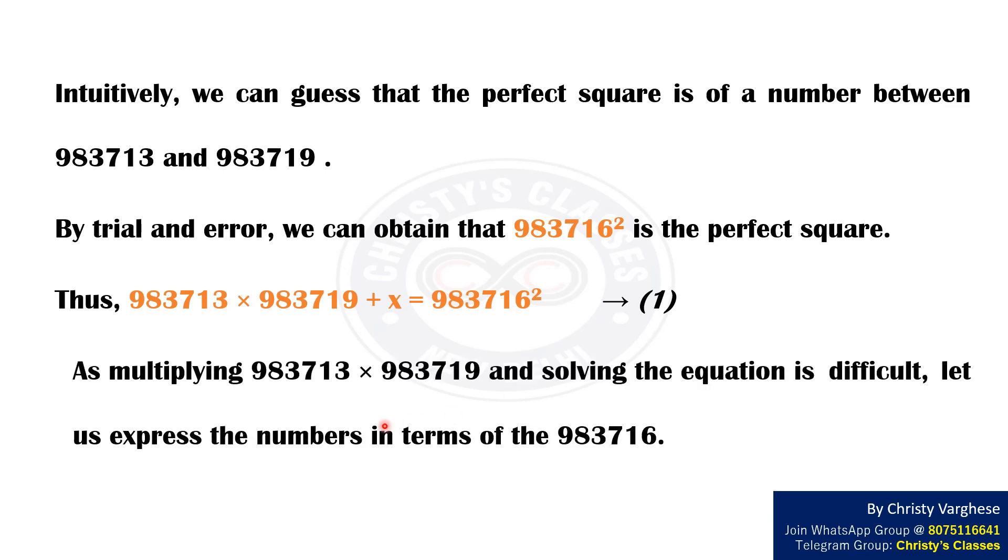As multiplying 983713 × 983719 and solving the equation is difficult, let us express the numbers in terms of 983716.